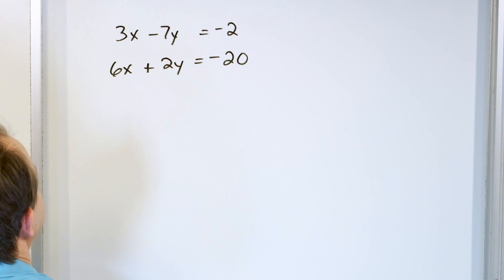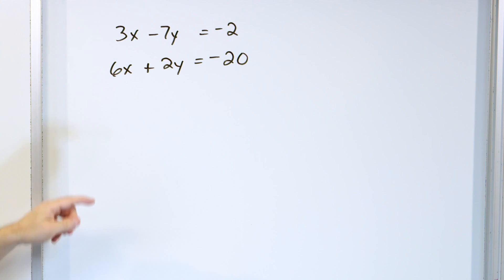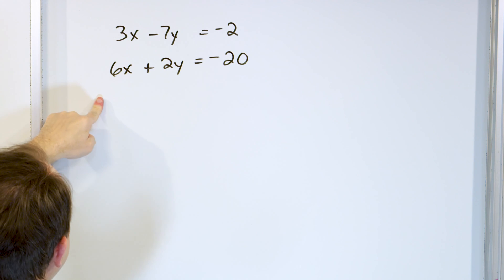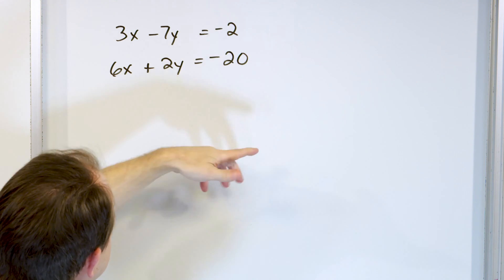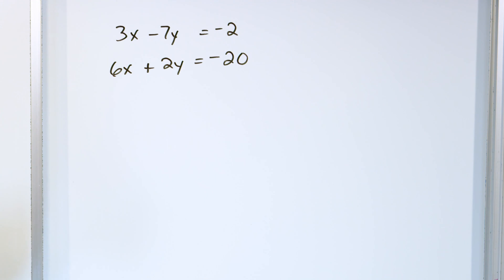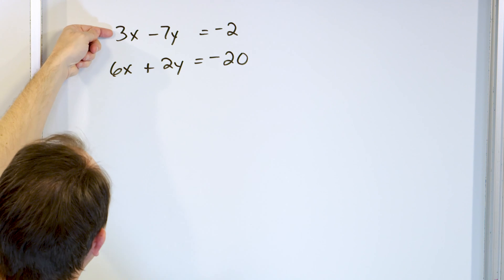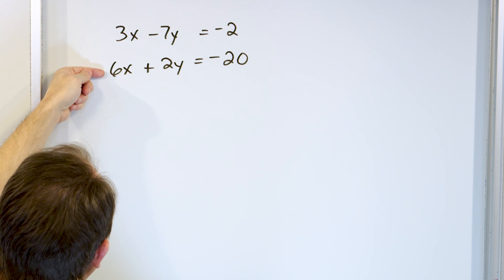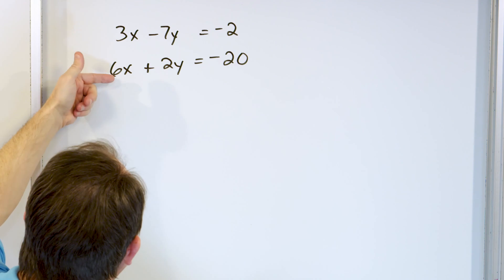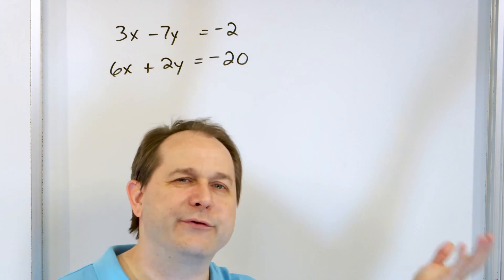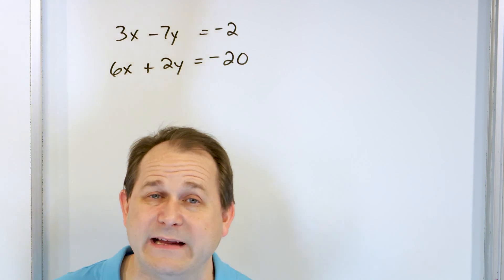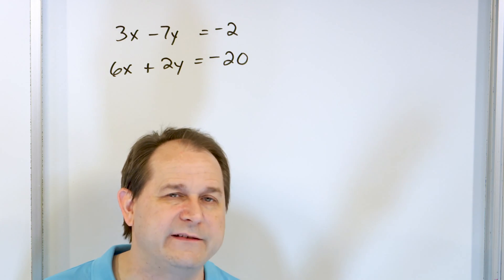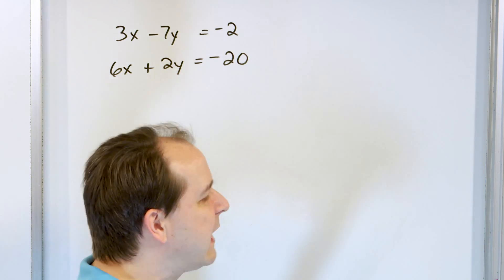Now, if we just add these straight away, we're going to get 9x, and this plus this will be negative 5y, but nothing will cancel — no variables will cancel. But this is a little different: we can't just multiply one of these by negative 1, because if we do that we still won't get any cancellations. So is there any other number we can multiply by to change one of these equations?